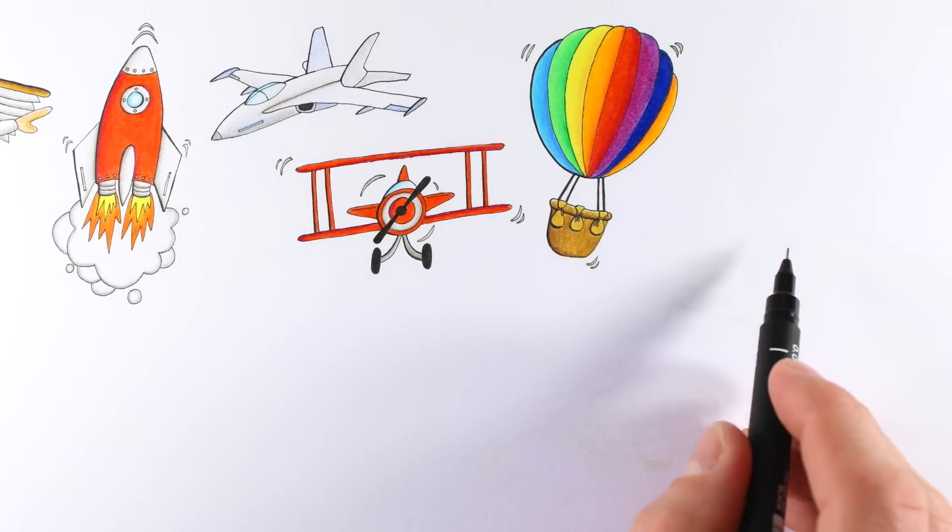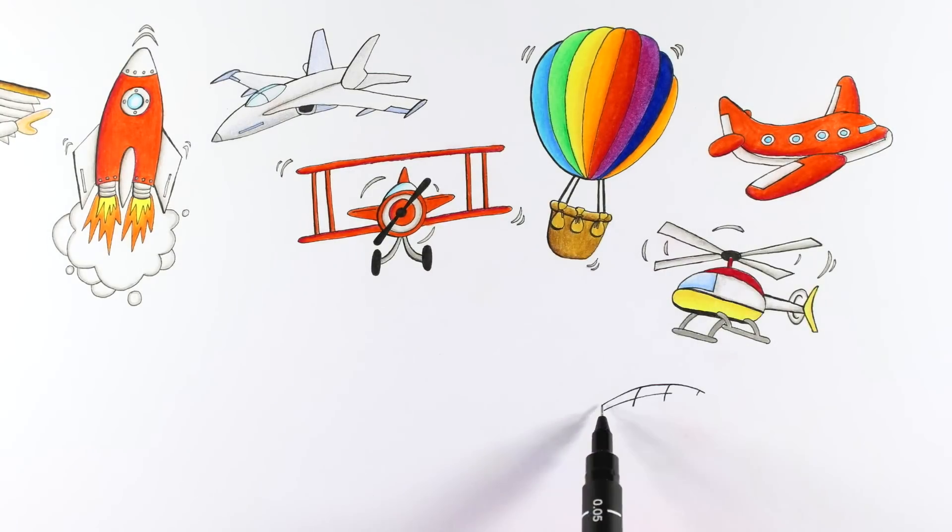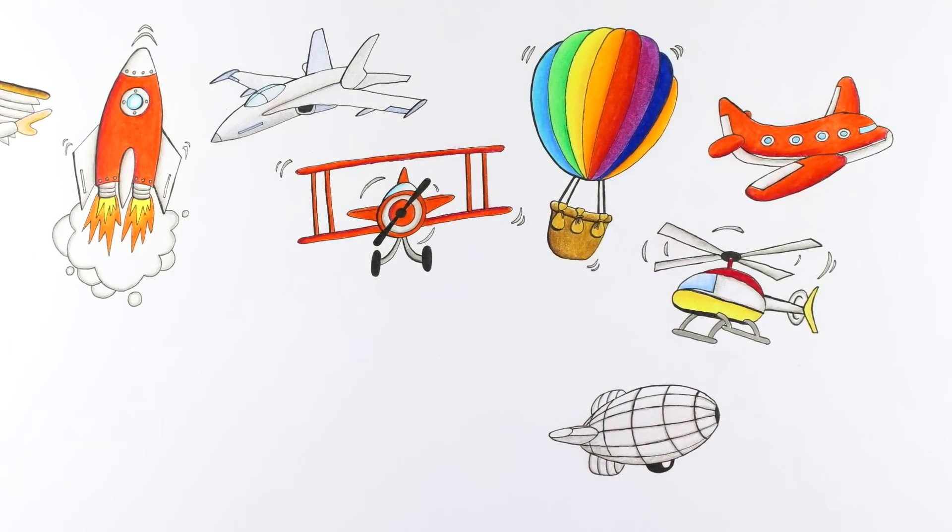The AirLander combines the best of aeroplanes, helicopters and airships to do jobs no other aircraft can.